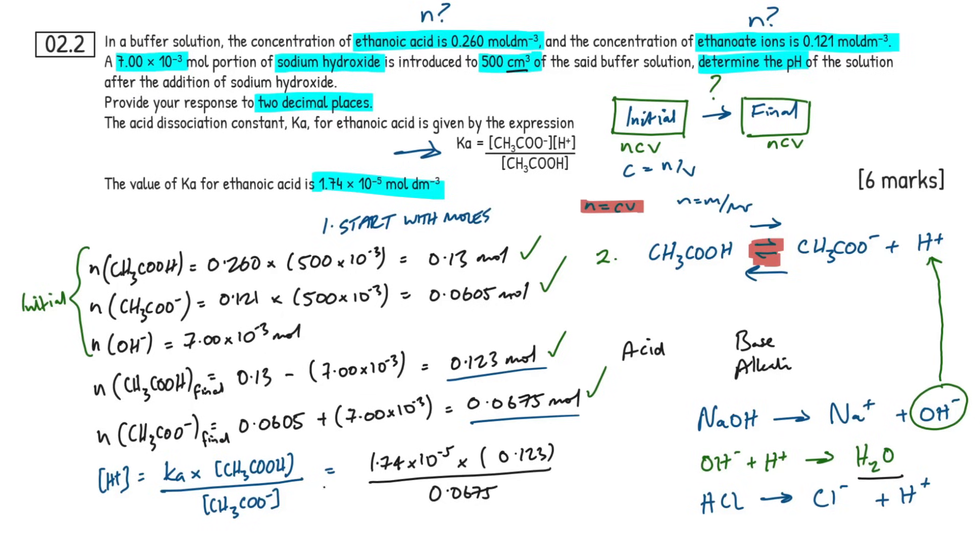So next up, we have this Ka expression. Now any time you see this, they haven't just given it to you for chance. They've given it to you because you need to rearrange it to find this, or maybe this, in a different question. You just have to rearrange it to find a specific variable, and then use that to find out the pH. So if we rearrange this, then, to make H plus the subject, it's going to become H plus equals, and we're going to have Ka multiplied by it, and then we can just take all of this to the other side. So we're going to times by this, divide by this. So it's going to be ethanoic acid concentration all divided by the ethanoate concentration.